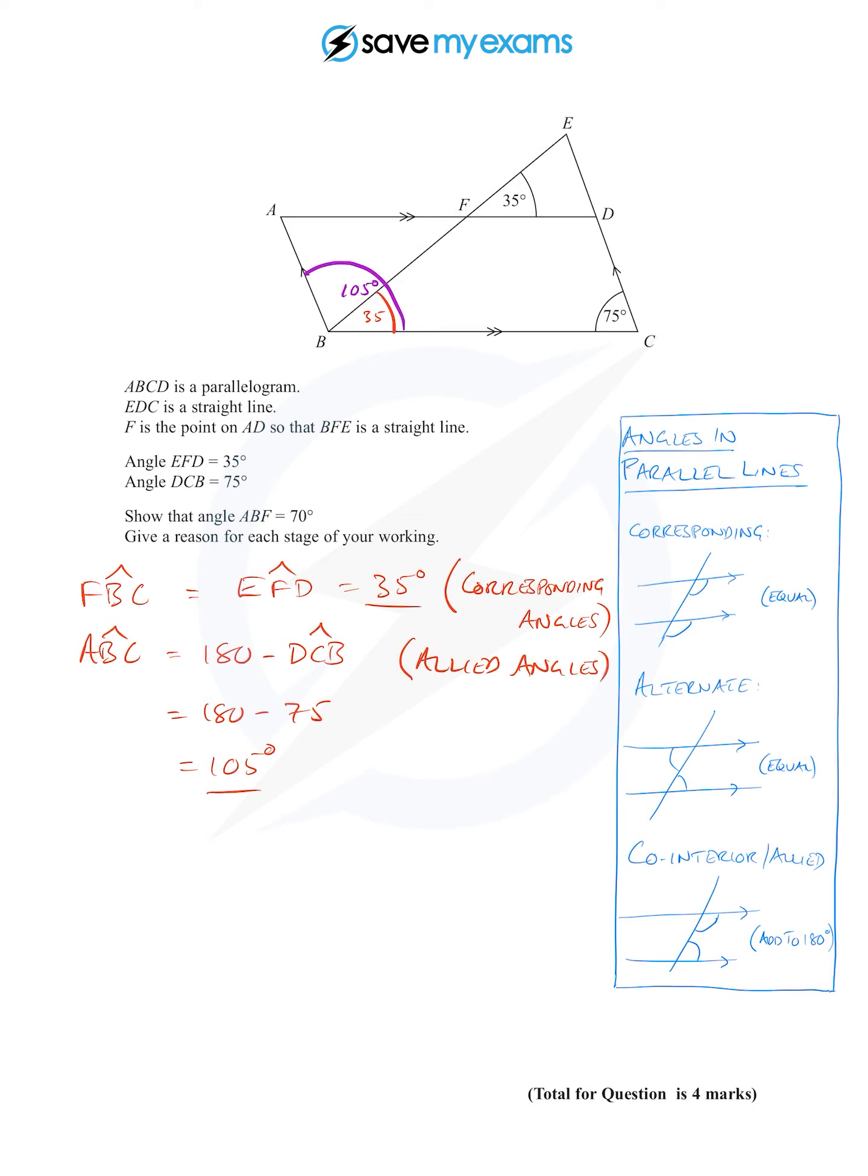And now without reason really having to be given, I can say that the angle ABF is the angle ABC minus the angle FBC, and we've got both of those. So that is 105 minus 35, which is of course 70 degrees. And just by following our nose, we're done.